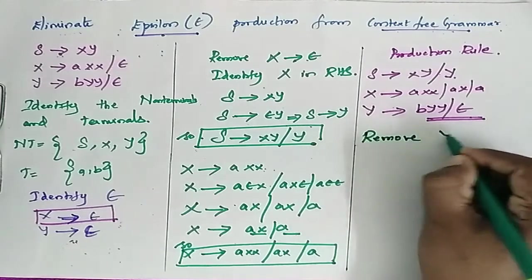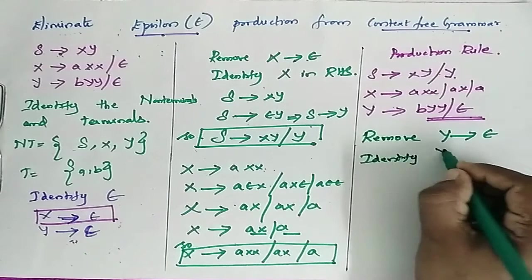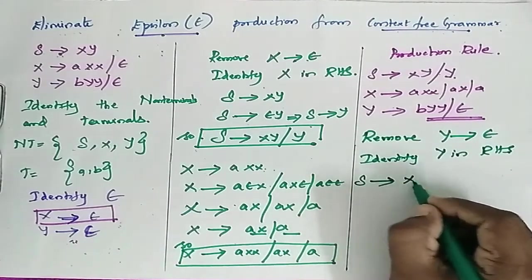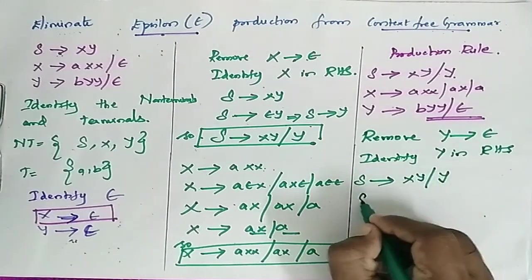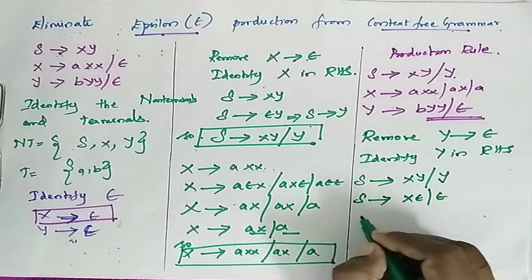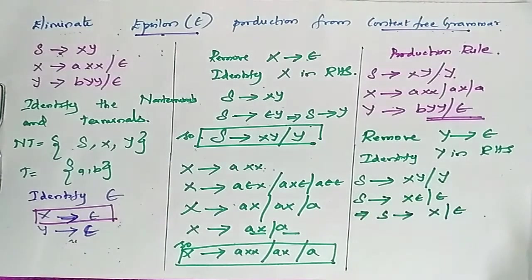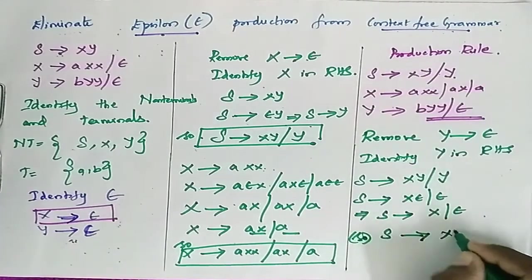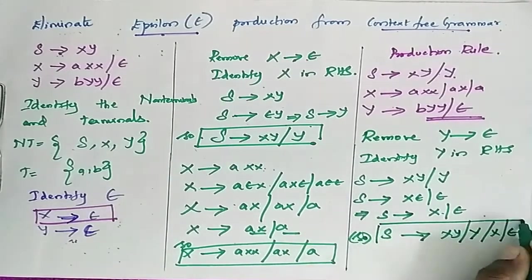Now remove Y determines epsilon. Identify Y in the right-hand side. S determines XY slash Y. When we replace Y with epsilon, we get S determines X slash epsilon. So S now becomes XY slash Y slash X slash epsilon.